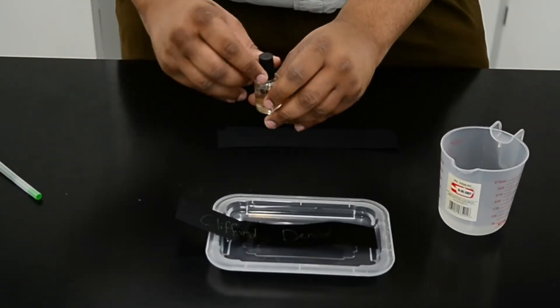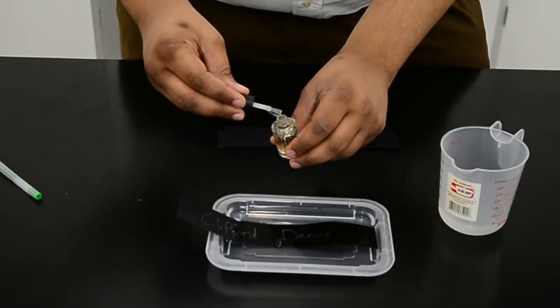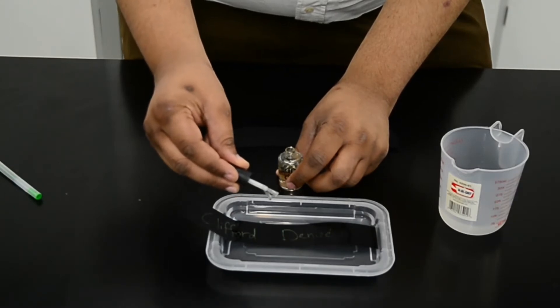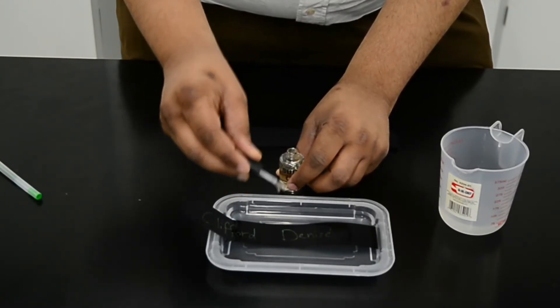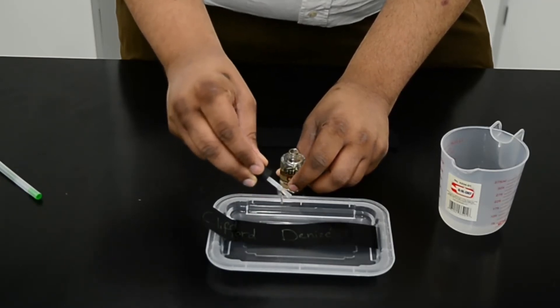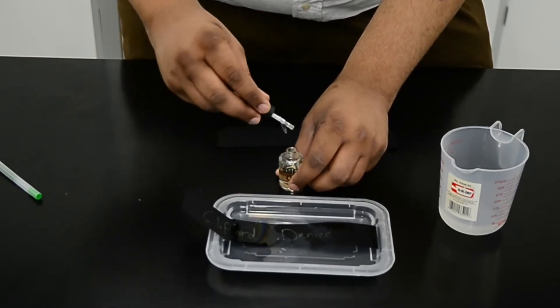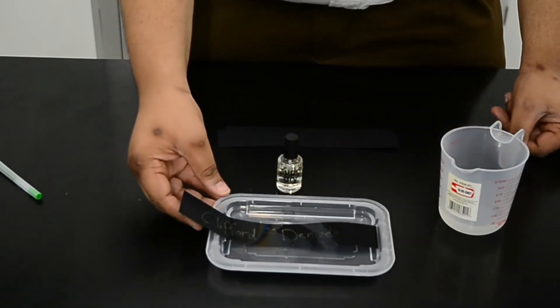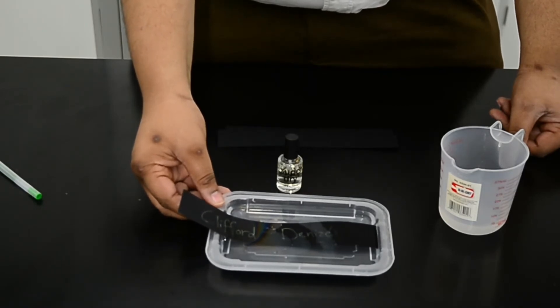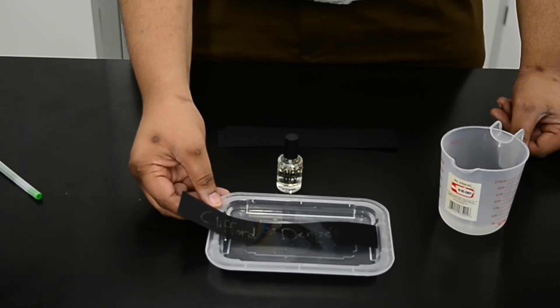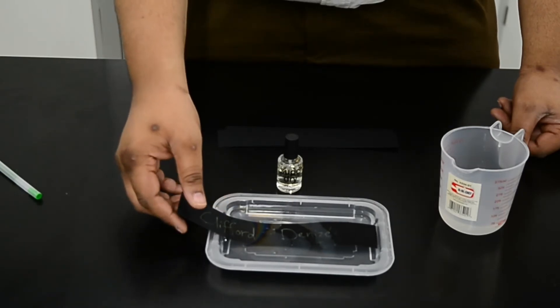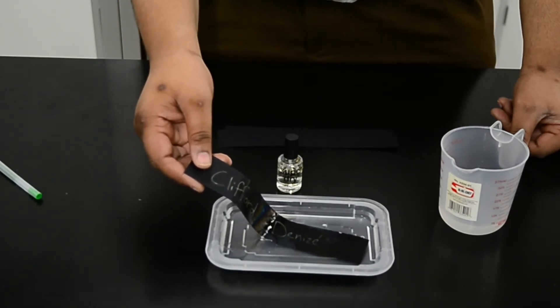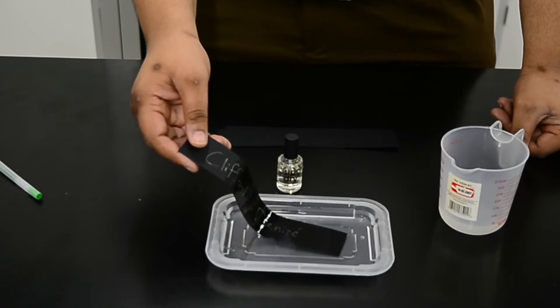Then use the nail polish brush to add a drop of nail polish into the pan, and you should see the nail polish spread into a thin film. Then lift the paper out of the water and you should see the thin film stick to the paper.